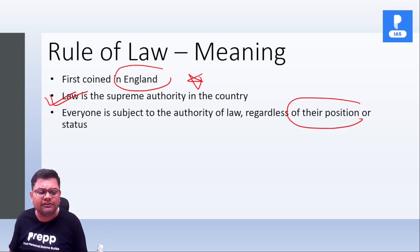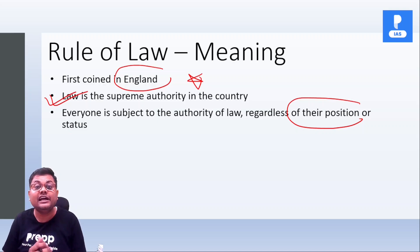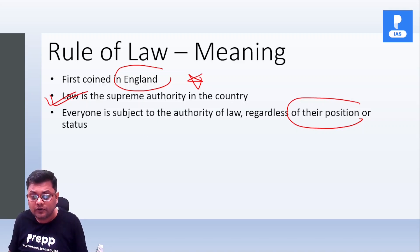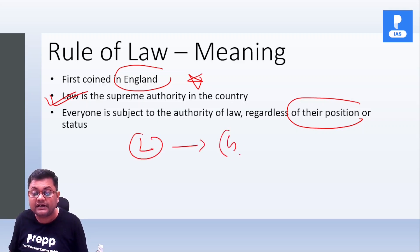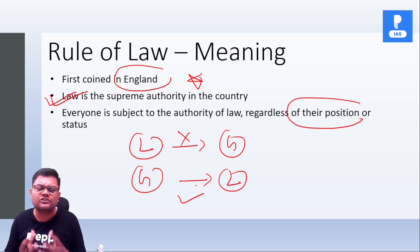Or iska ultimate objective kya hai? To eliminate the element of arbitrariness in the action of the government. So we can say ki it is not the law that is subjected to the government — no. It is the government that is subjected to the law. And this is the meaning of this concept of rule of law.